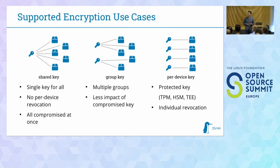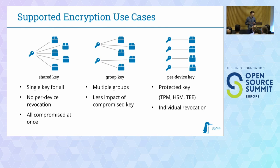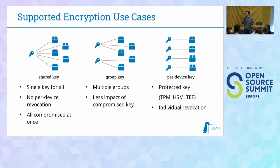So we can stream an encrypted bundle directly to a partition. Typical use cases: the simplest is a shared encryption key — one key for all devices. That's basic security; if the key is compromised, it's compromised for all devices. A better approach is group keys, forming different groups of devices each with a different key — if one key is compromised, only that group is affected. The ideal case is per-device keys, which allows per-device revocation. But with individual keys you have to secure them individually, putting them in a trusted platform module, an HSM, a trusted execution environment, or similar.